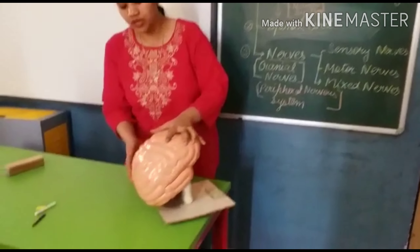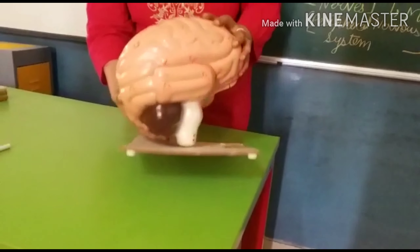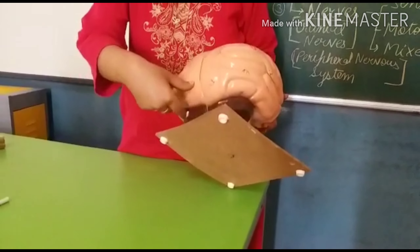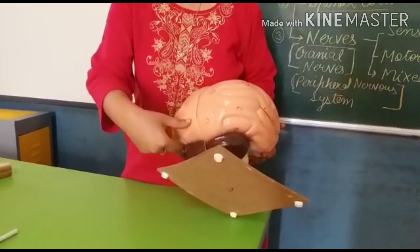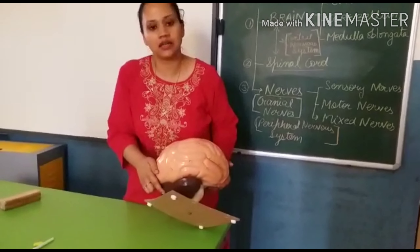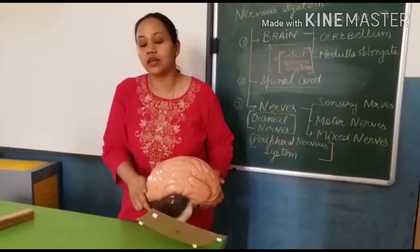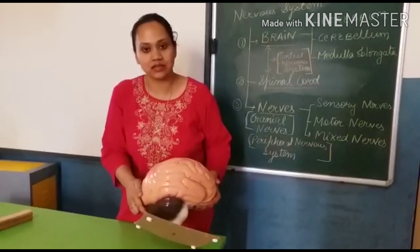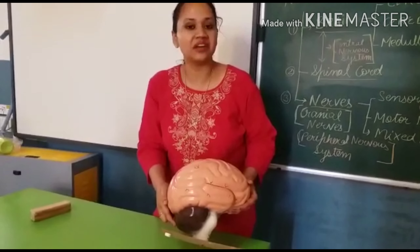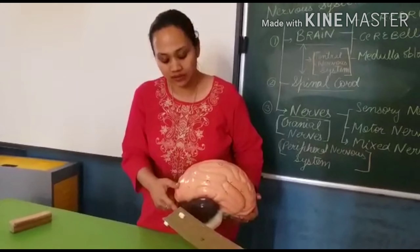Next is the cerebellum. You can see this egg-like structure — it is called the cerebellum. The cerebellum is responsible for coordination and balancing work, such as when you are walking straight.